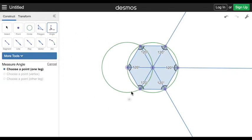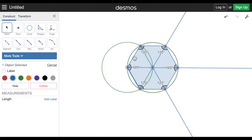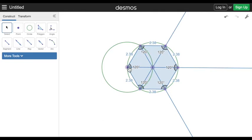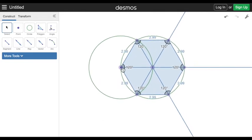Okay, so the side lengths. I'm going to select all the sides. I'm going to put a label there, 2.38, all 2.38.